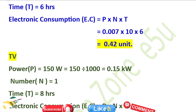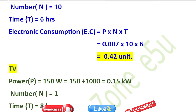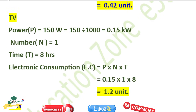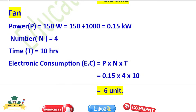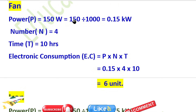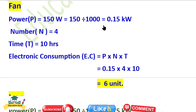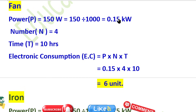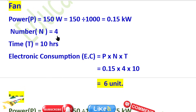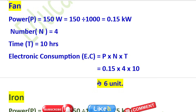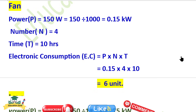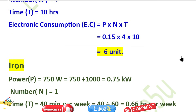Fan: power = 150 watt = 0.15 kilowatt, number = 1, time = 6 hours (approximate). Fan consumption calculated. Total so far approximately 6.7 units.